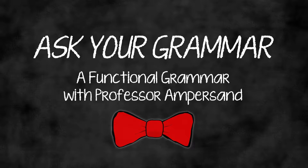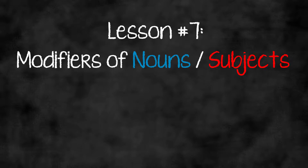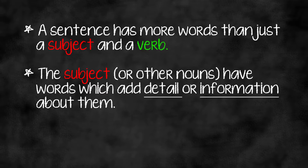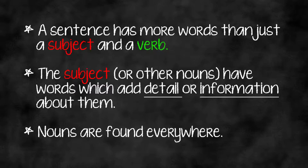Ask your grammar: modifiers of nouns, modifiers of subjects — same thing. A sentence has more words than just a subject and a verb. As we have said before, the subject or other nouns have words which add detail or information about them. Nouns are found everywhere, as you have realized.